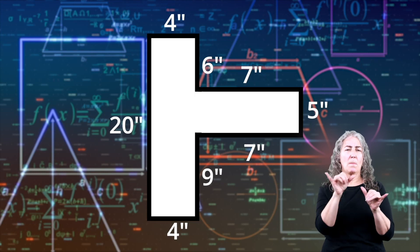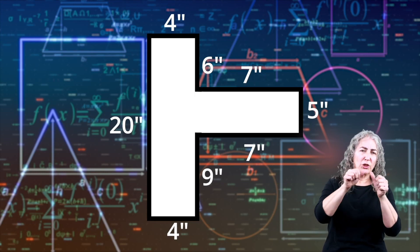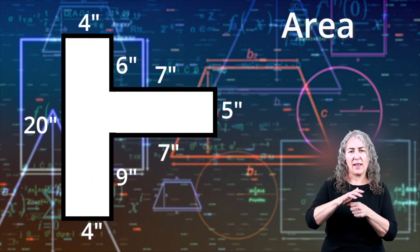Okay, now that we know the missing measurements, we can figure out the perimeter and area of the shape. Let's start with the area.